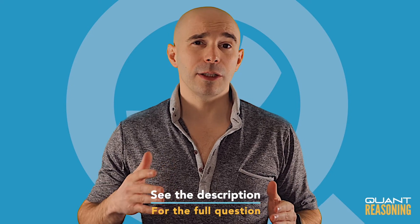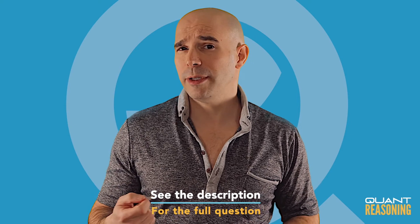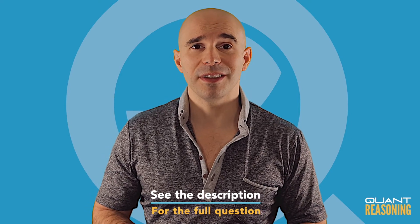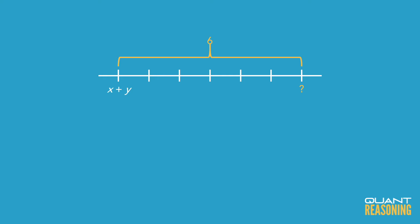What number is six units to the right of x plus y? What kind of information would you need in order to answer this question? I'm thinking if I knew where x plus y is on the number line, then I could just go six units to the right of that and get the answer. So I would rephrase this question to what is the sum of x plus y?